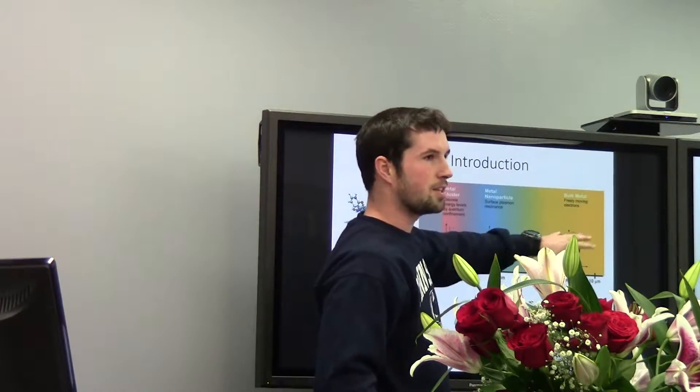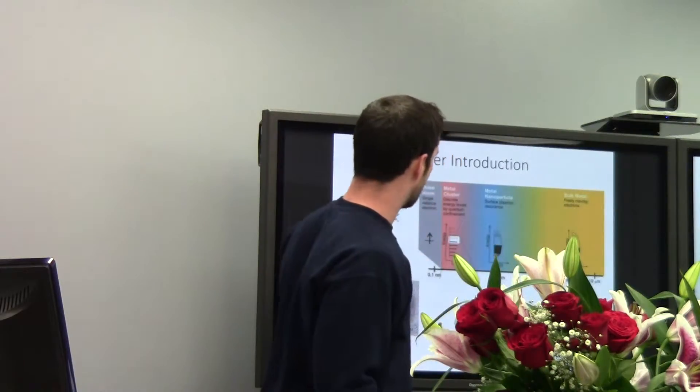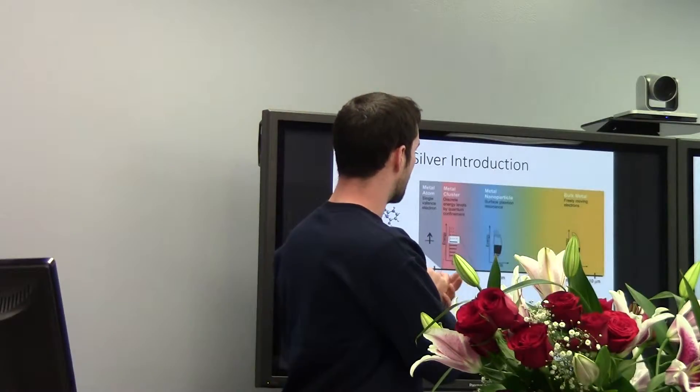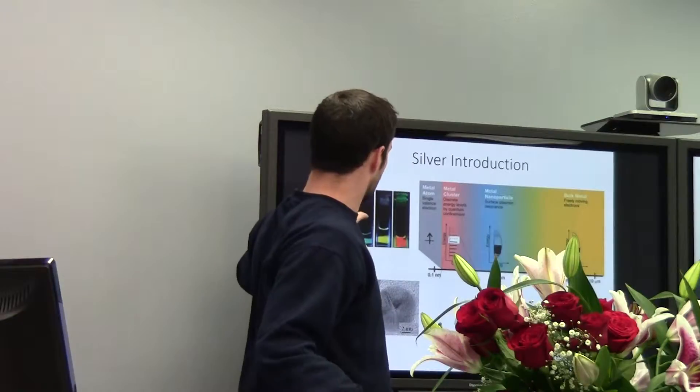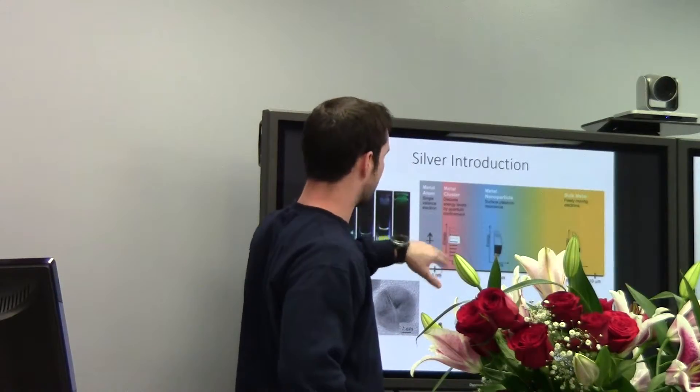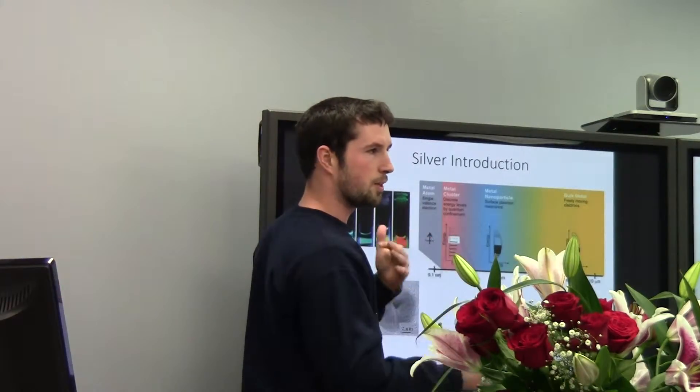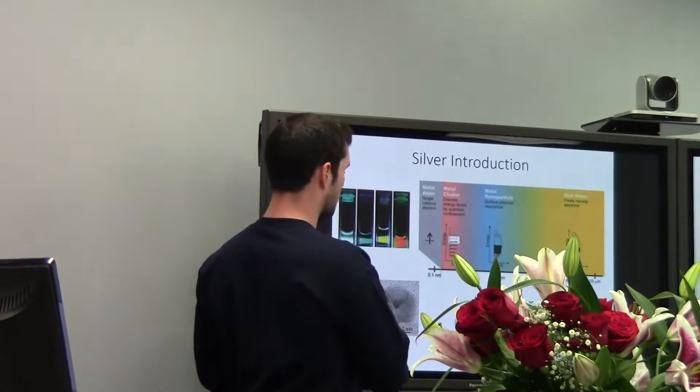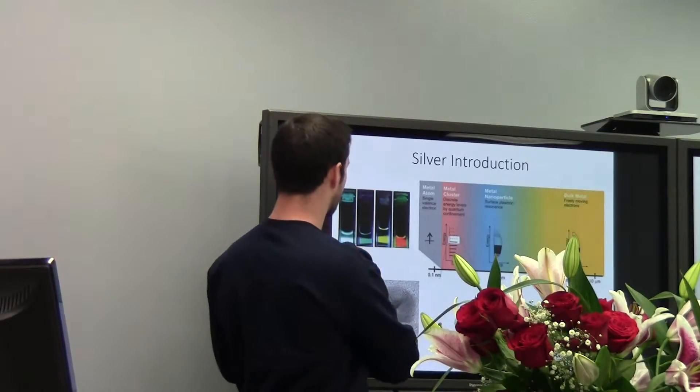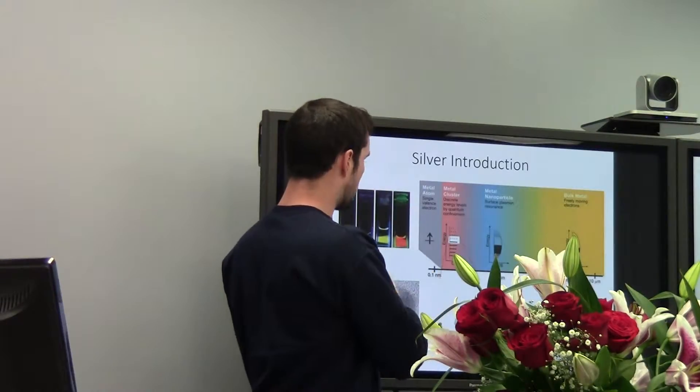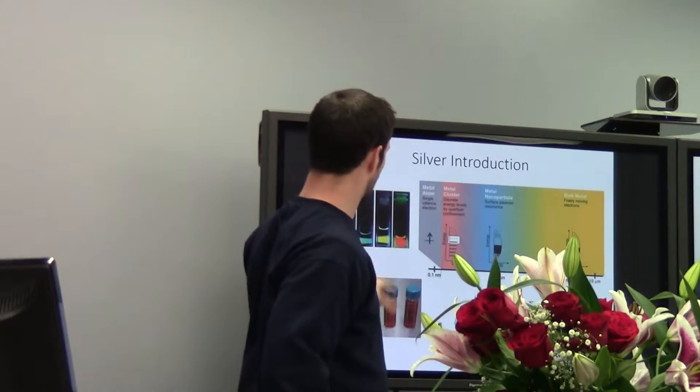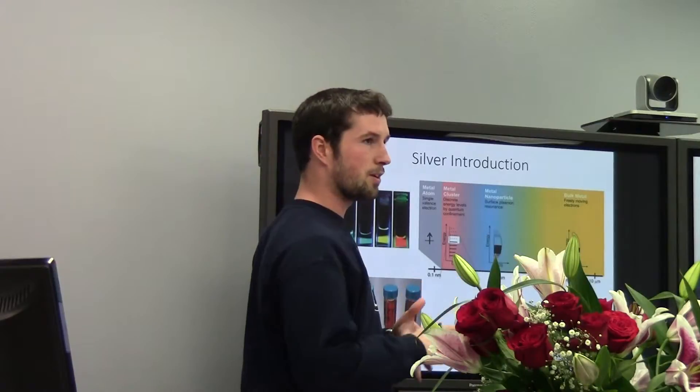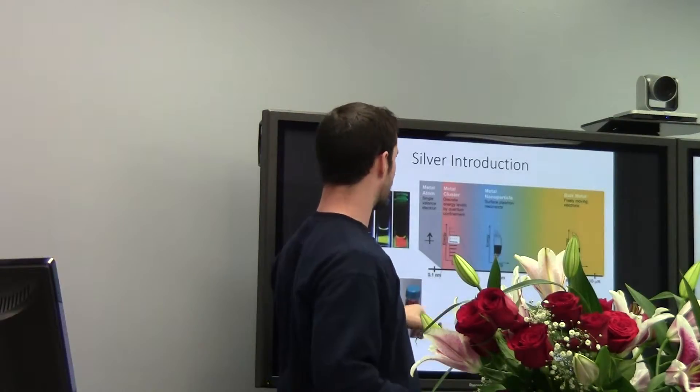Here's the representative density of states for each one of these models. Just kind of for reference of what we'll be looking at. So because the density of states becomes discretized with the smaller nanoclusters, that allows for different optical transitions. And then work by Diaz and Ross showed that you can actually get fluorescence from these models.